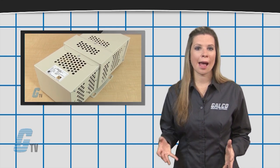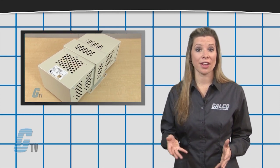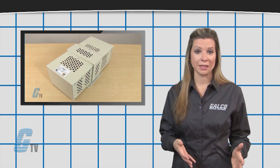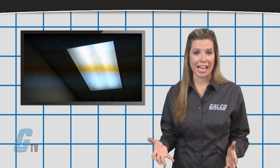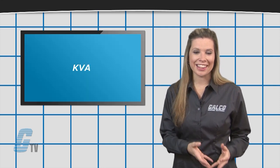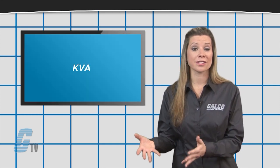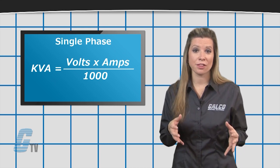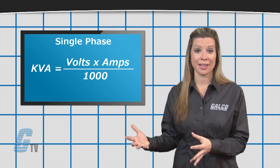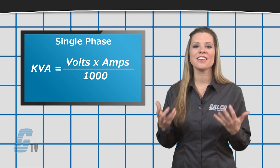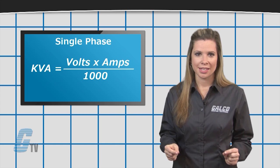This includes a combination of all the various loads that the transformer supplies, including lights, heaters, and motors. To find the KVA for single phase, I can multiply the volts and amperes of the load together, and then divide it by 1000.